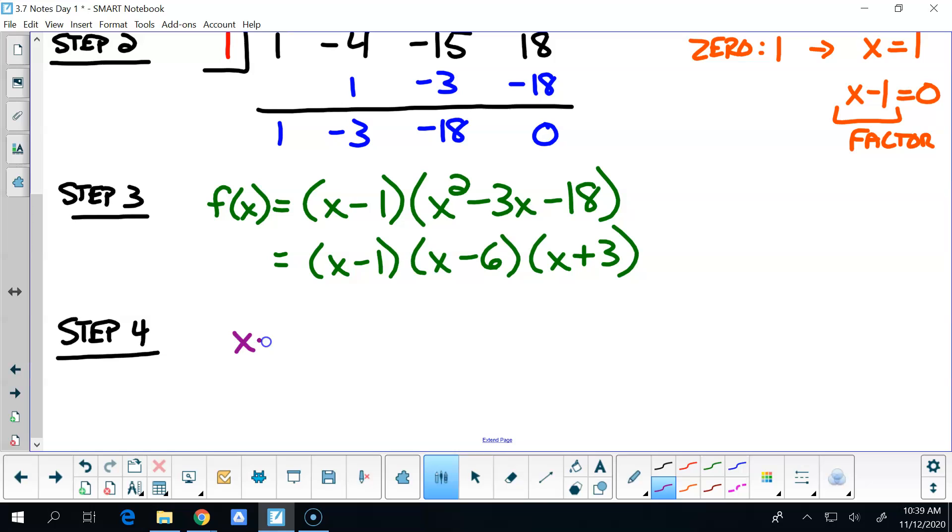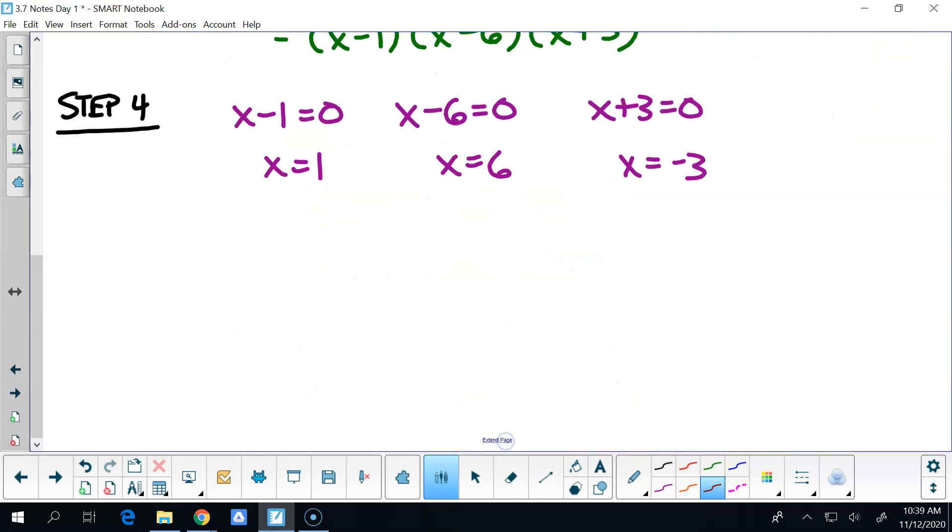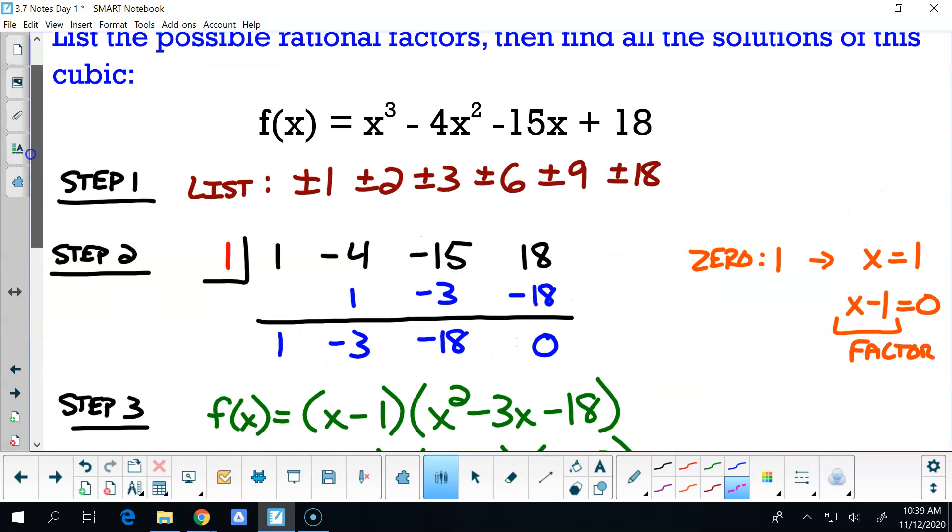And then we would say x - 1 = 0, that gives us x = 1, that one that we found. x - 6 = 0, that gives me x = 6. x + 3 = 0, x = -3. So my three zeros then would be my final answer, if you will, would be negative three, one, and six.